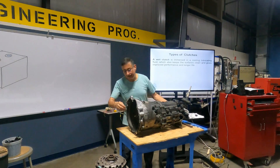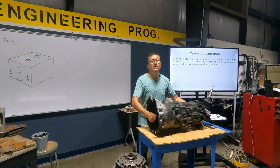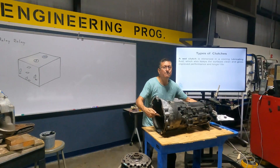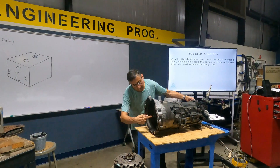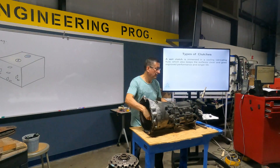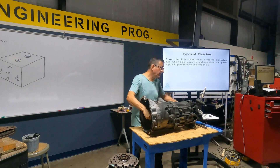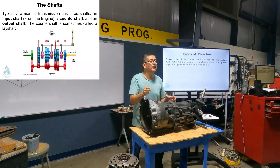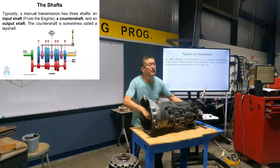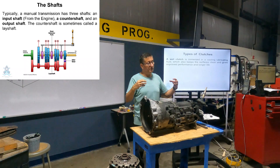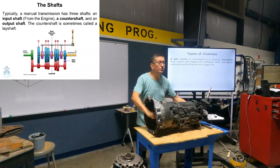This is the output shaft and this is the input shaft. Are this and this the same shaft? No. If this is moving — look at this — this is moving and the output is not moving. Why? Because internally I don't select any gear. This is independent — input shaft and output shaft.